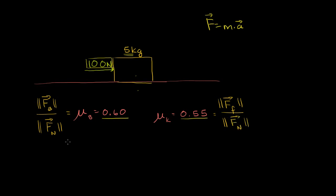It makes sense that the larger the contact force — the more these surfaces are pressed together — the more they get into each other's grooves at the atomic level, and the more budging force or friction force is needed to overcome motion. In either case, the force of friction always acts against your motion, so pushing the block one way means friction always opposes that direction.